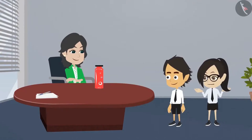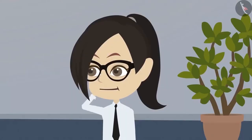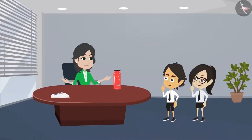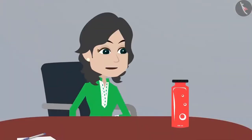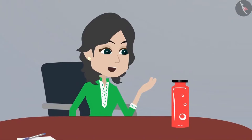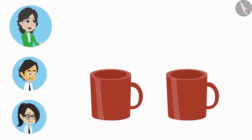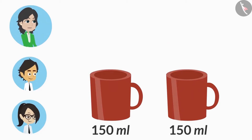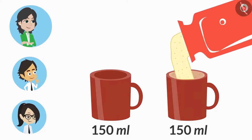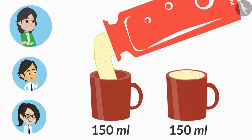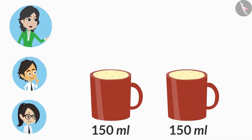But how will we measure 150 ml? See, there are different measuring cups to measure liquid. But we do not have those cups with us right now. Then how will we measure the buttermilk? Look, I have two cups here. A normal size cup is approximately 150 ml. You can pour the buttermilk into both these cups. Both the cups are completely filled. This means that the buttermilk has been divided into two equal parts.